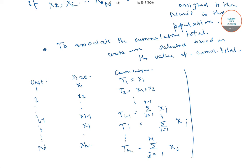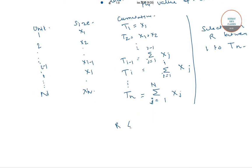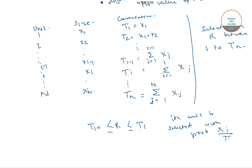Now what we would do is we would select a random number r between 1 to TN. This is done by using the random number table. Now if r is less than or equal to ti and greater than or equal to ti minus 1, then the ith unit is selected with probability xi divided by TN, where i goes from 1 to N.